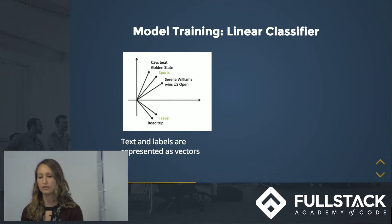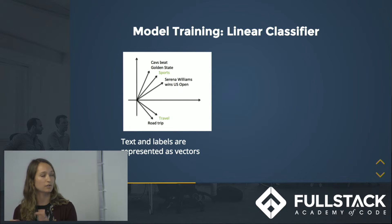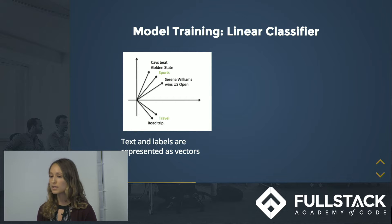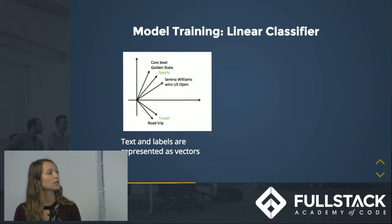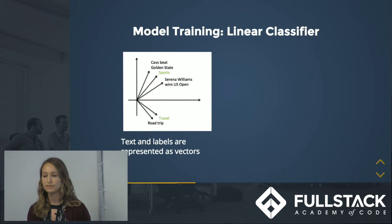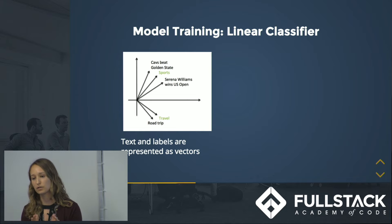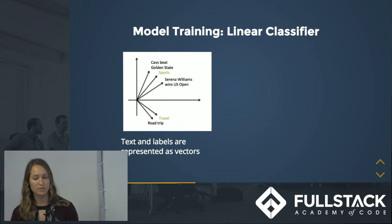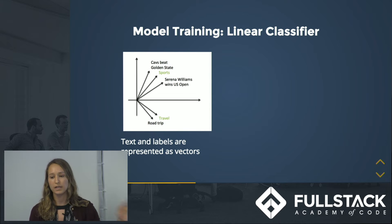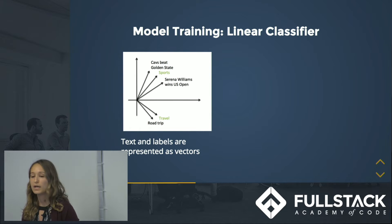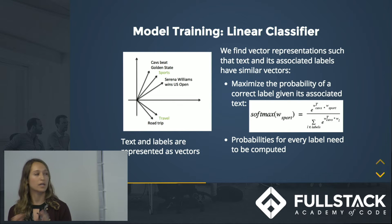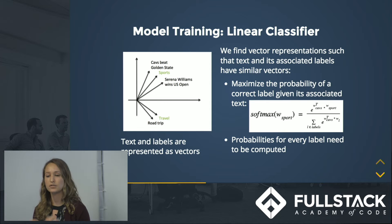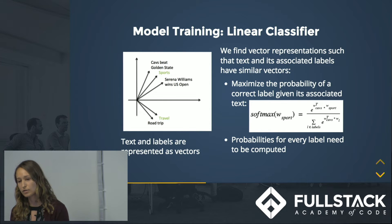Let's talk about model training in more detail, starting with a linear classifier. In this method, you consider each piece of text and each label as a vector in space, and the coordinates of that vector are what we're trying to tweak and train so that the vector for a given piece of text and its associated label are really close to each other. For example, in this 2D graph, the vector for 'Cavs beat Golden State' is close to the vector for its label 'sports'.